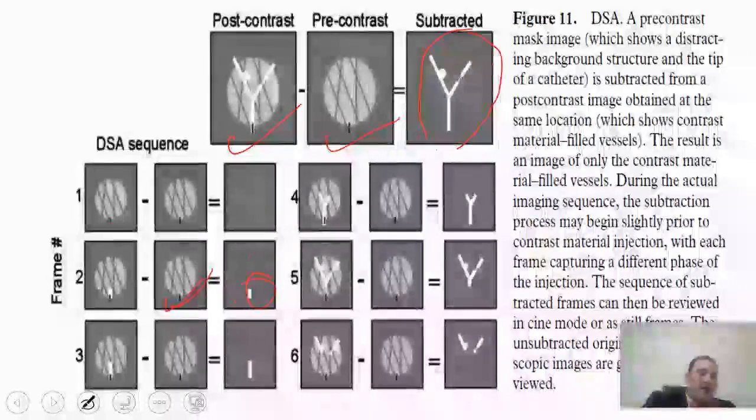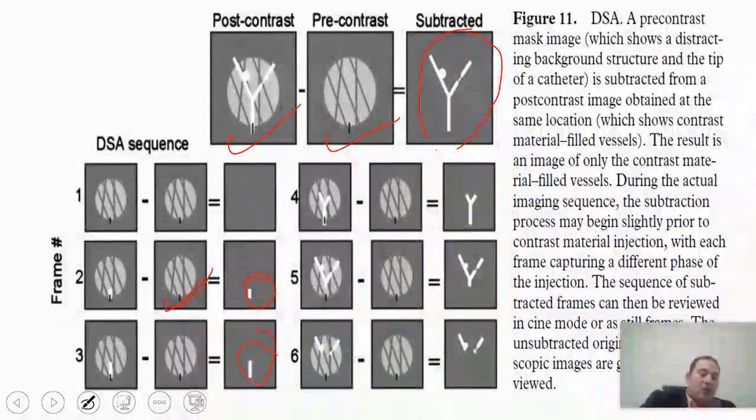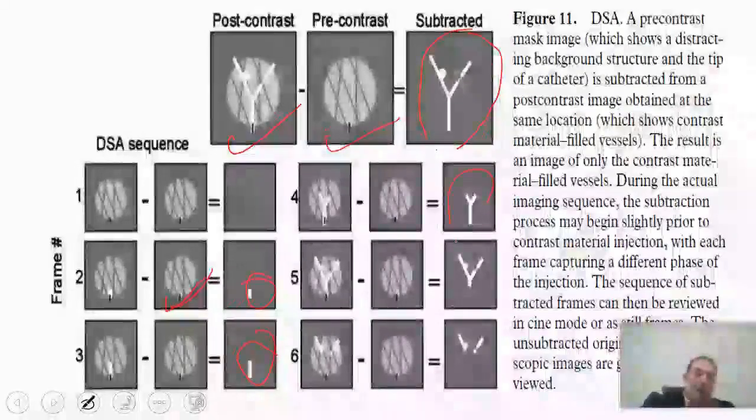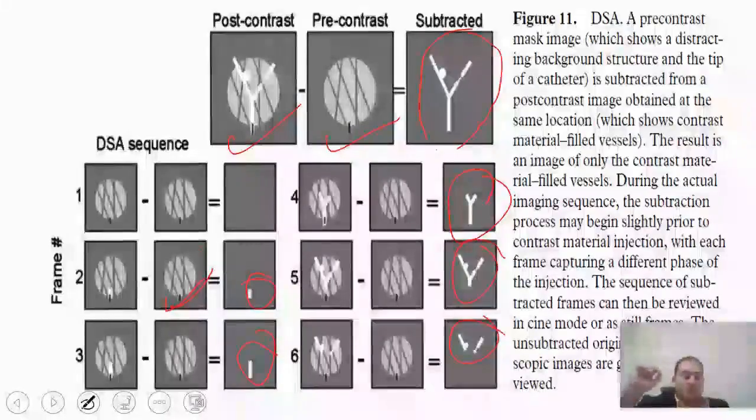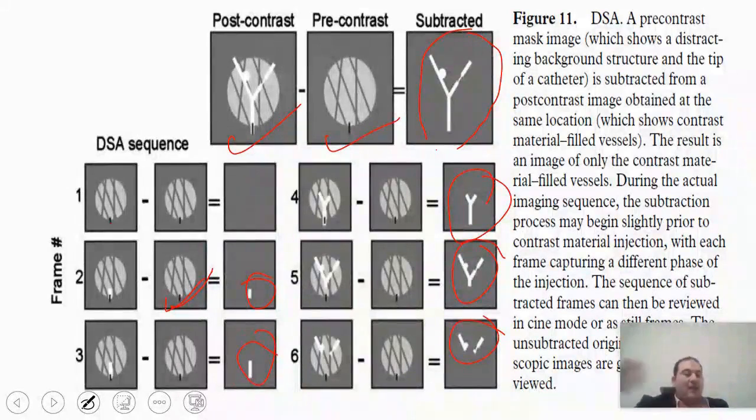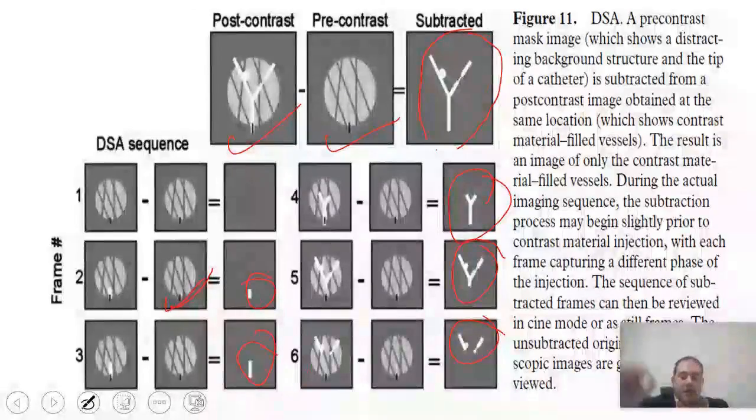The subtracted image shows the vessel. In frame number four, here is the vessel. In frame number five, here is the vessel. In frame number six, we will continue. So, you can also work on the existing frames in dynamic imaging, not just in spots.